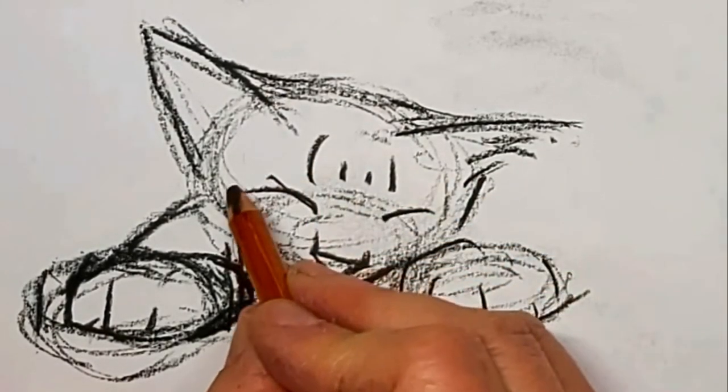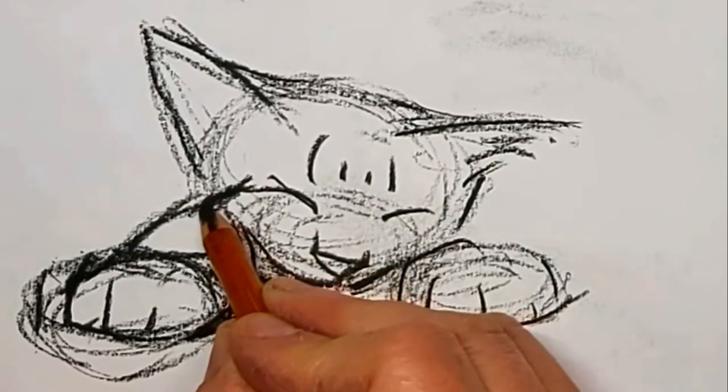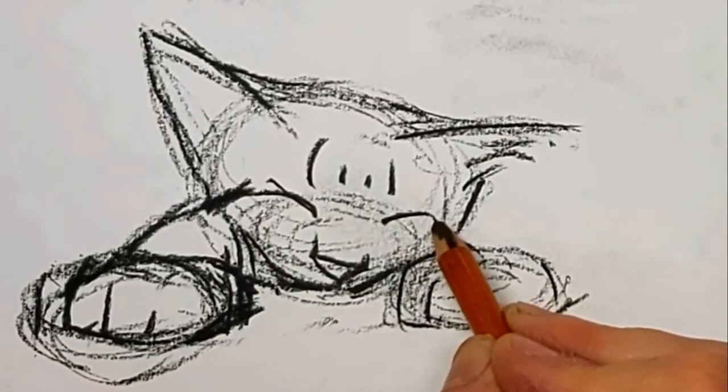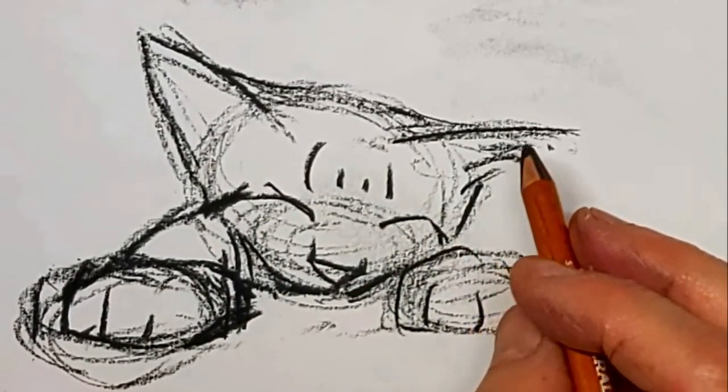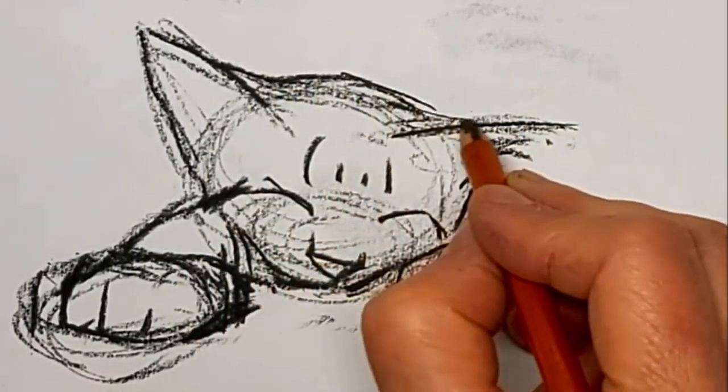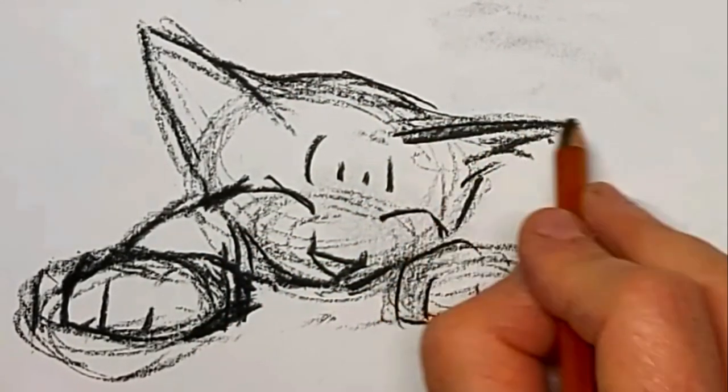Notice I'm really not drawing fur. I showed a suggestion of fur coming out of the ear, but we know the cat has fur. We know it's a cat because of other things, the shapes of the ears and paws and things.